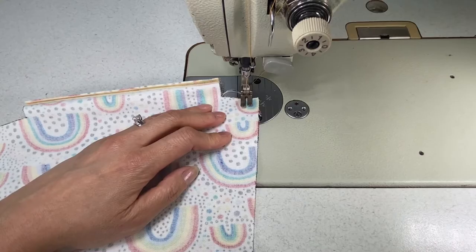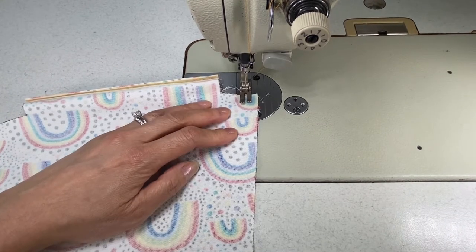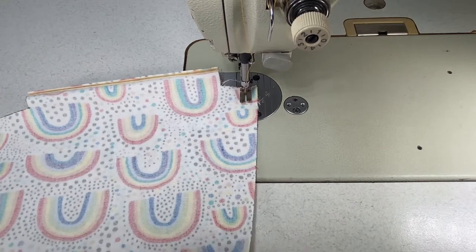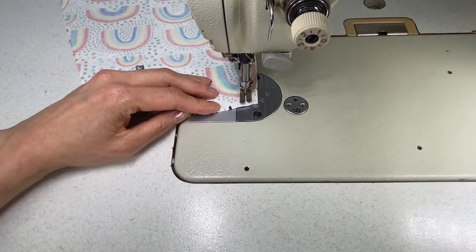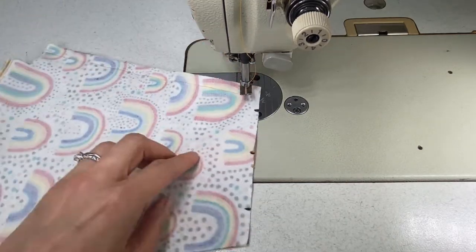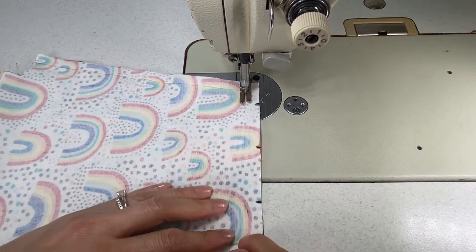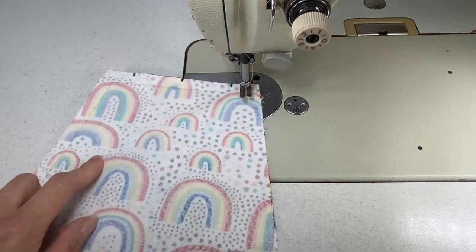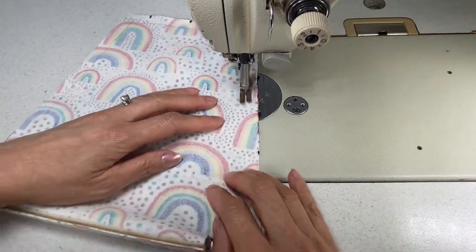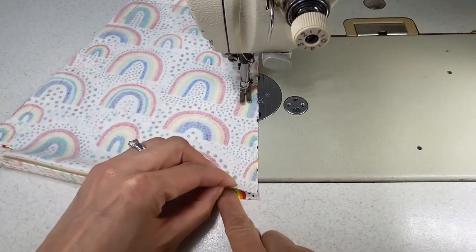Starting at the bottom and using a half an inch seam allowance start by back tacking and stitch along one side. Stop when you get to half an inch from the top, have your needle down, lift your presser foot and pivot, stitch along that top edge, pivot again at the next corner and then stitch down the other side and back tack to finish.